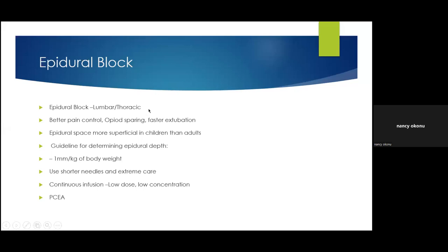For local and regional anesthesia, contraindications are the same as for adults. Consent must be obtained — talk to parents preoperatively about side effects. Skin infection at the site is an absolute contraindication. Discuss with the surgeon regarding the surgical site. Relative contraindications include coagulopathy, except for local infiltration. Always seek consent and discuss potential risks before proceeding with any regional technique.